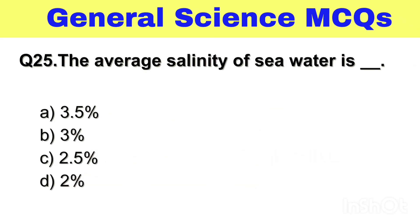Question No. 25. The average salinity of sea water is — Option A. 3.5%, B. 3%, C. 2.5%, D. 2%. Right answer, Option A. 3.5%.